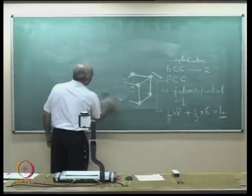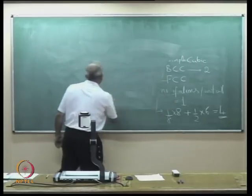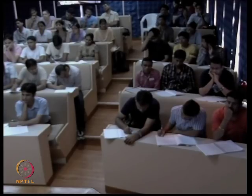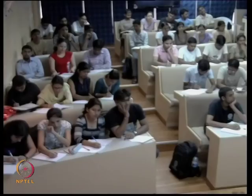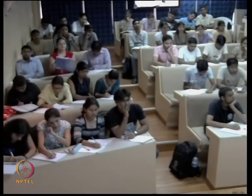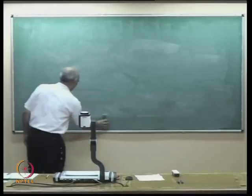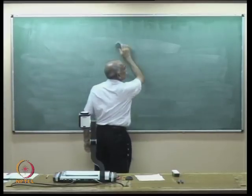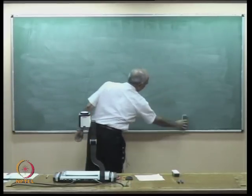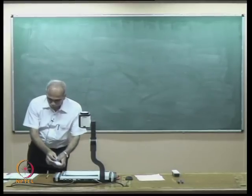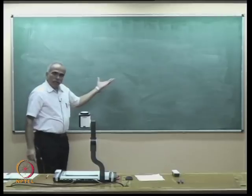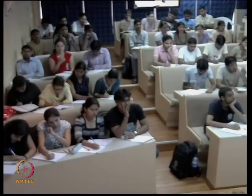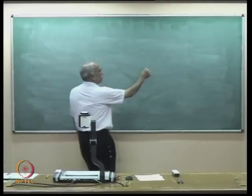Now, why do I need these numbers? My objective is to have an estimate of the number of valence electrons. To know the number of valence electrons, I must know the number of atoms per unit cell and number of electrons per unit cell — simple engineering estimates.